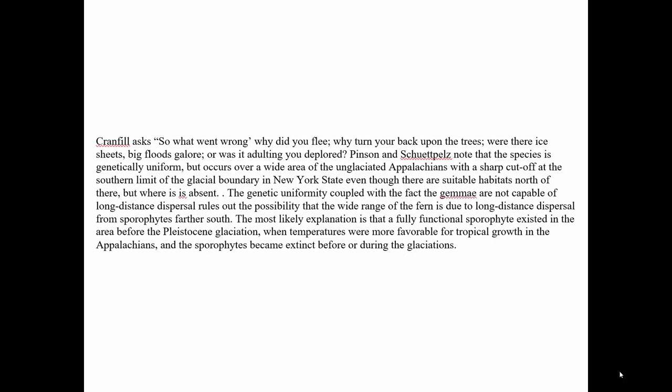But it only exists in unglaciated areas, even though there are some formerly glaciated places where the conditions are right for it. The gemmae can't disperse very far. So it seems that before the glacial times, the conditions were fine for the sporophyte to grow, and it was a regular fern with an alternation of generations life cycle.